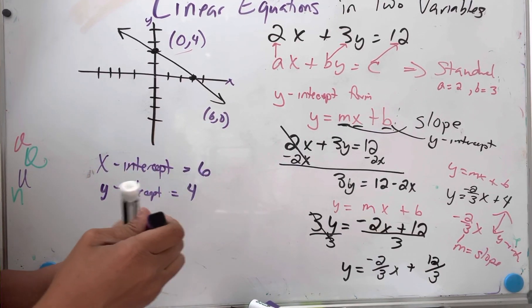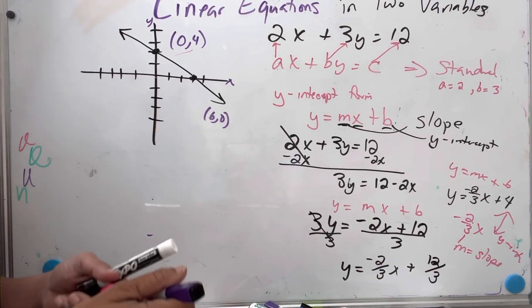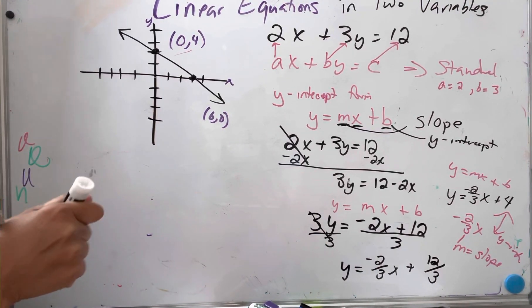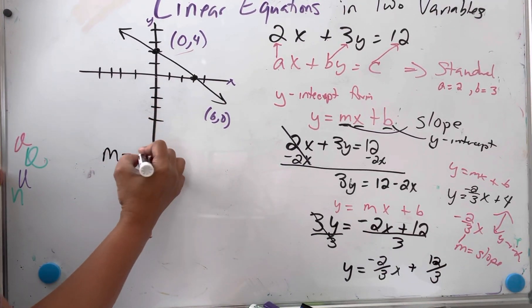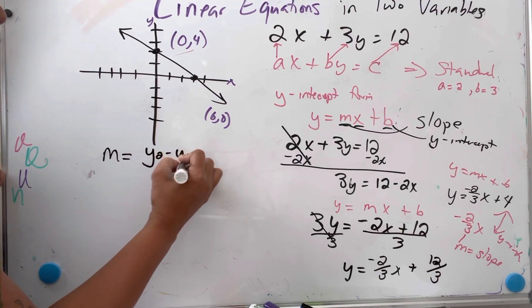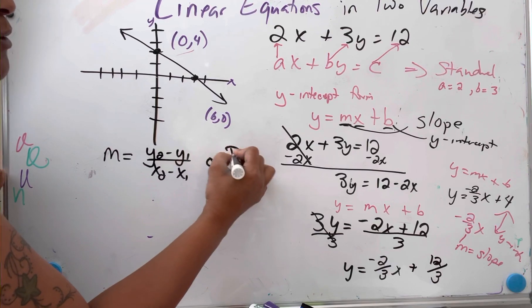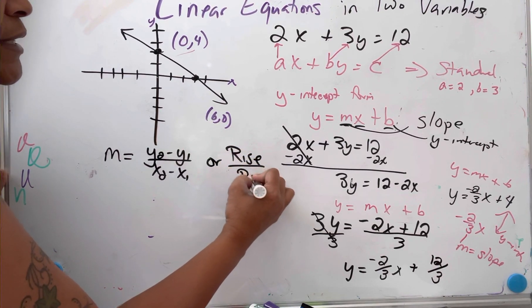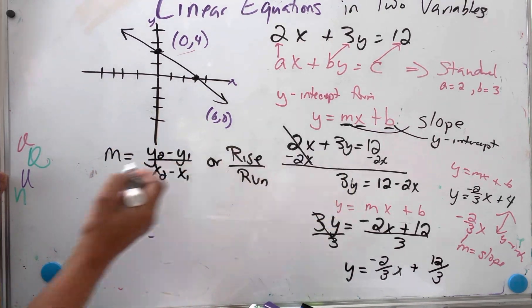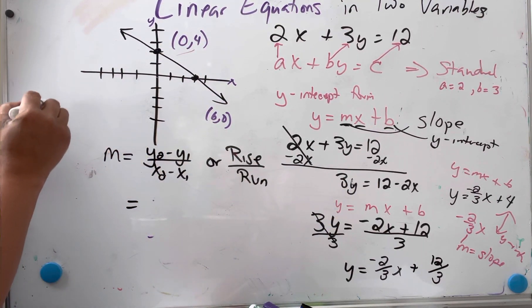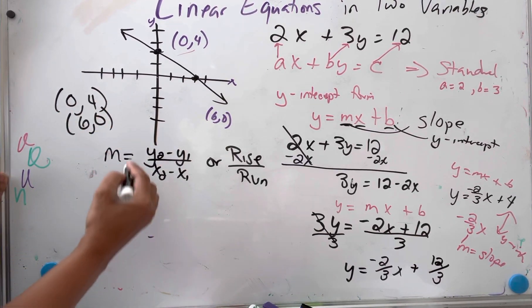The slope intercept form of a line tells you a lot about that graph and line. Let's talk about how we get the slope. It's so easy. Slope is equal to y2 minus y1 over x2 minus x1, or you can say the rise over the run. That simply means you're going to use those ordered pairs.